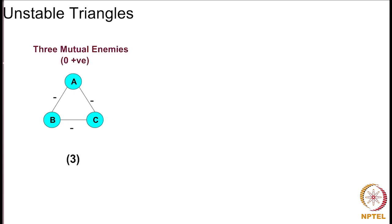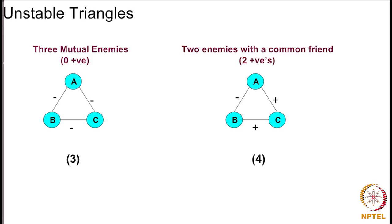That was the unstable triangle with zero positive edges. The second unstable triangle has two positive edges and one negative edge, meaning two enemies who have one common friend. This situation doesn't stay for long because two enemies would not like to have one common friend, so it changes the network configuration. To summarize: triangles with either zero or two positive edges are unstable.